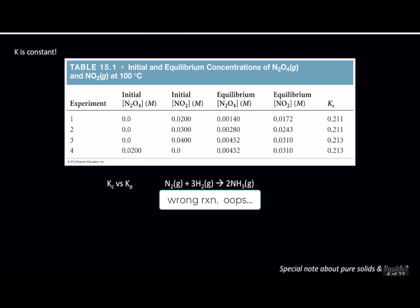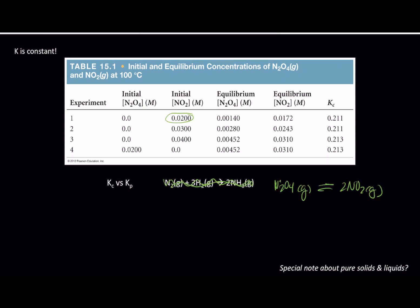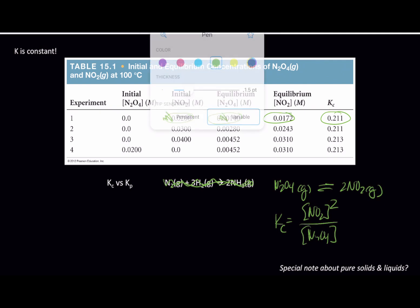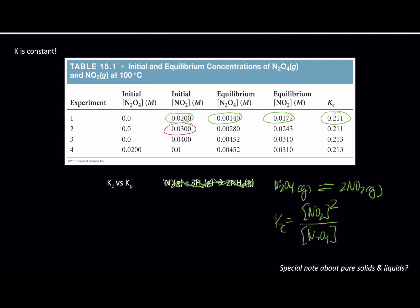A better way to look at that would be this table from your book. What this is saying is that I can start with 0.02 molar NO2, and this is how much I end up with, which gives me a Kc value. K for this is equal to — we're doing this in concentration — NO2 raised to the second over N2O4. Note that if we start with a different value of NO2, we get different equilibrium concentrations, but this K value doesn't change. K is constant — we don't always end up with the same exact concentrations, but the ratio of our concentrations will always give us the same number, as long as we're at the same temperature. Temperature is the one thing that can change K.